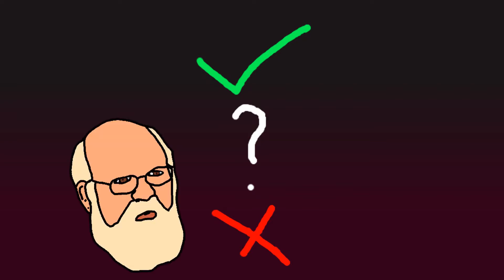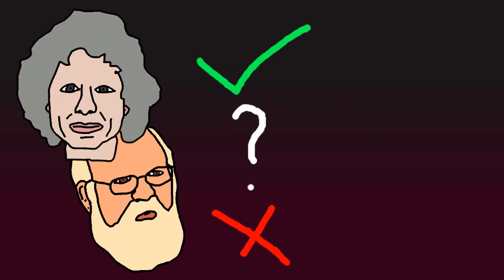Should we be worried about AI alignment? Some critics, like philosopher of mind Daniel Dennett and psychologist Steven Pinker, think that fears about dangerous AI are overblown and that we shouldn't spend too much time dwelling on such hypothetical scenarios.